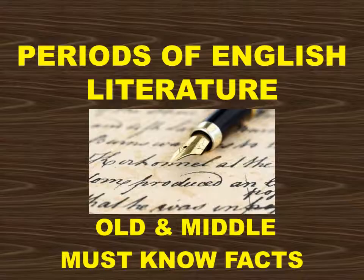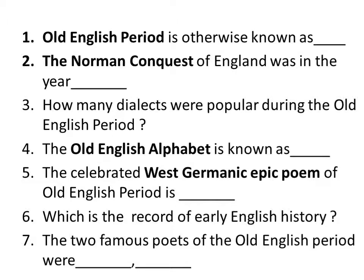Old English period is otherwise known as the Anglo-Saxon period. The Norman Conquest of England was in the year 1066 and it was led by William the Conqueror, the Duke of Burgundy. How many dialects were popular during the Old English period? Four.